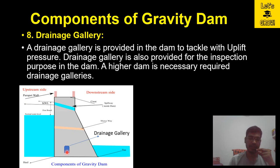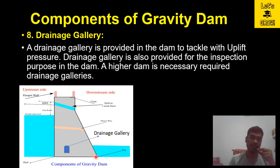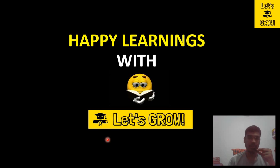When you compare the pressure distribution diagram without a drainage gallery to one with a drainage gallery, there is a clear reduction in the pressure distribution curve, showing that the drainage gallery effectively helps tackle uplift pressure.